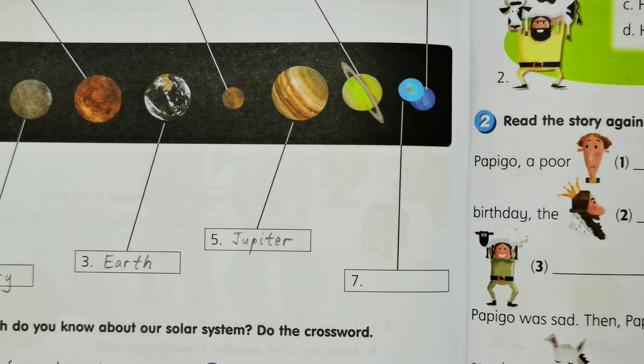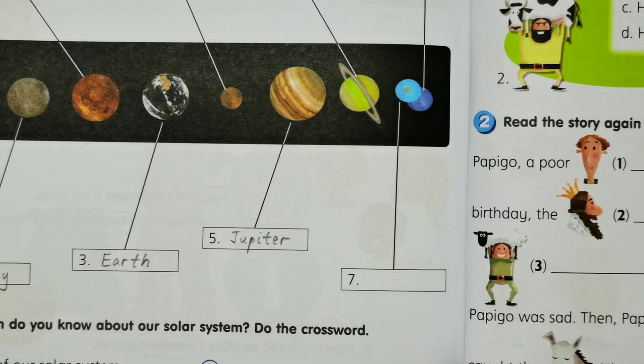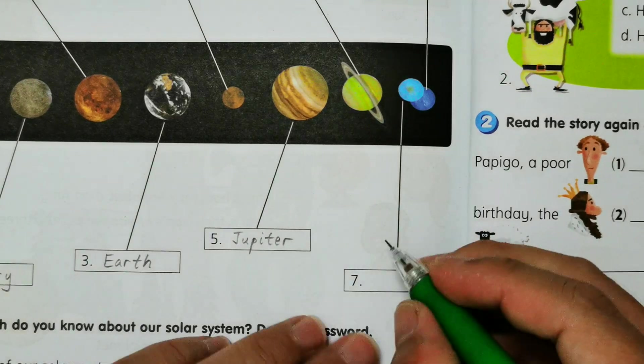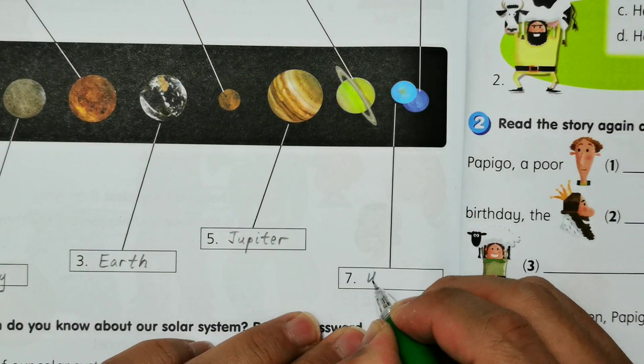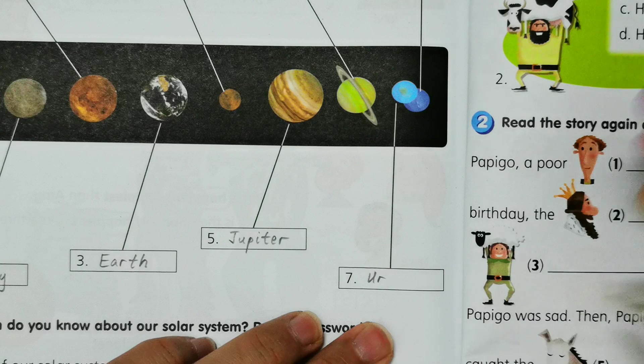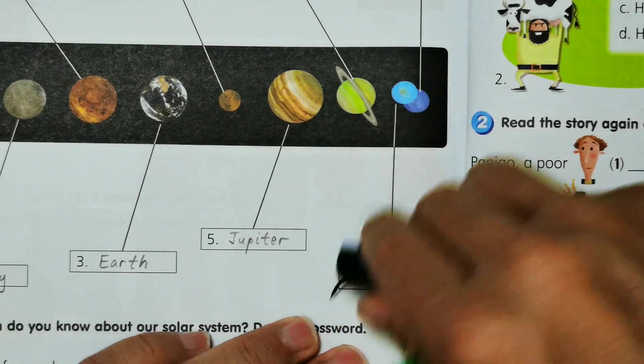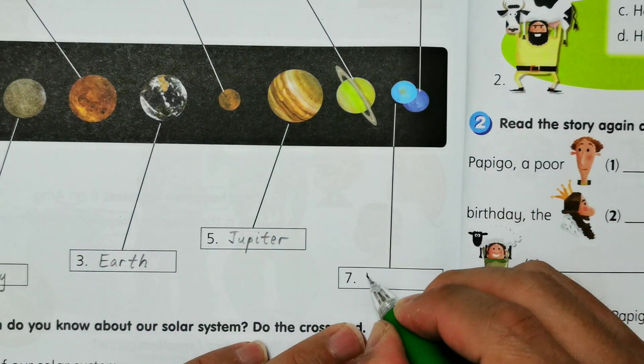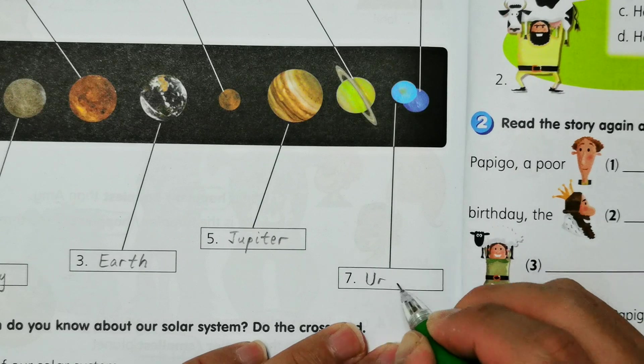And then planet number seven, so number seven Uranus, so I should write U as this one, Uranus. And then the eighth planet, Neptune.